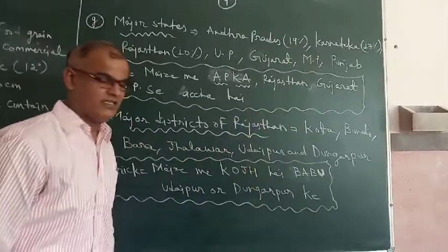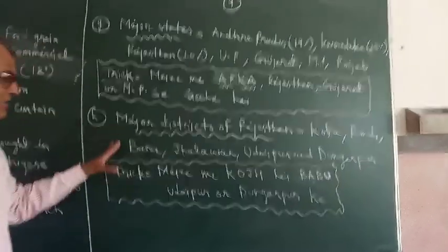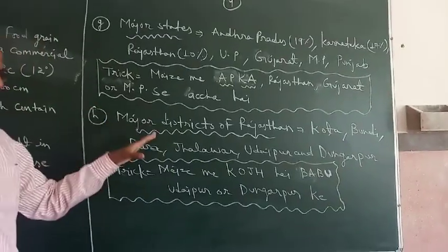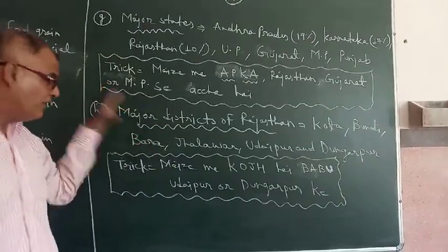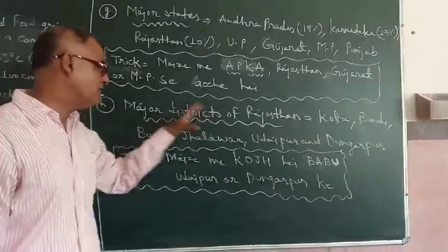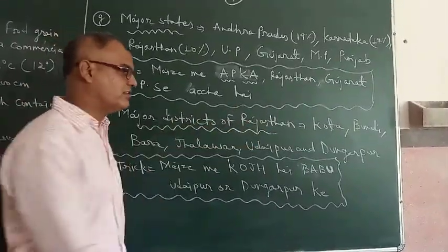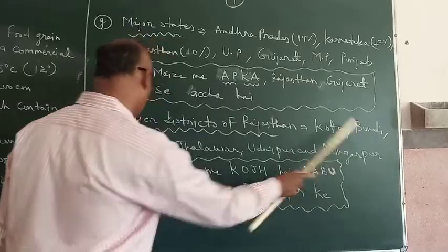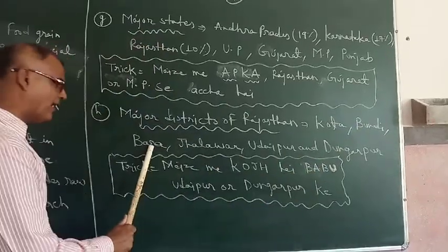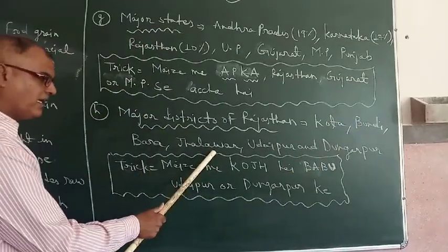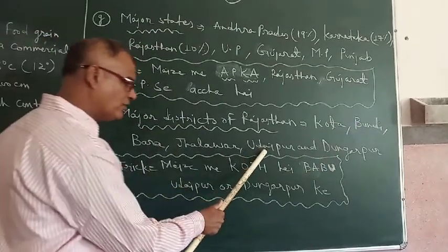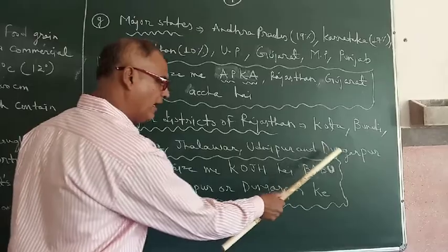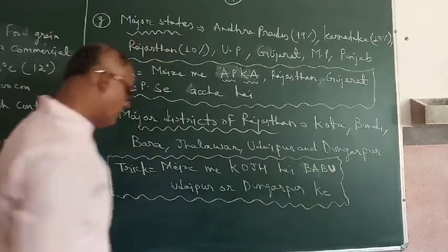The major Maize producing districts of Rajasthan are: Kota, Bundi, Bara, Jalawad, Udaipur, and Dungarpur.